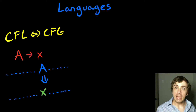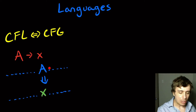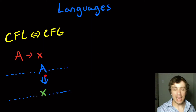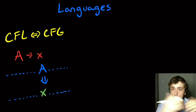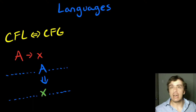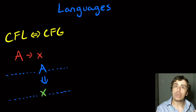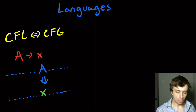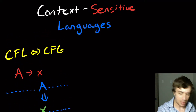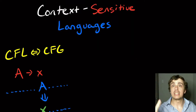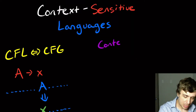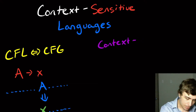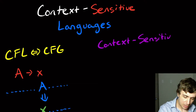But sometimes it may be useful to only allow a rule application to happen if A is surrounded by certain things. Here, a context-free rule says wherever you see an A, you can replace it with X, independent of anything else going on. But it might be important to look at the context of where this A actually is in order to apply the rule. That's what's called a context-sensitive language, and there's an equivalent notion of a context-sensitive grammar — a CSG.